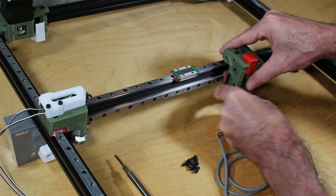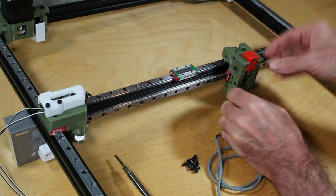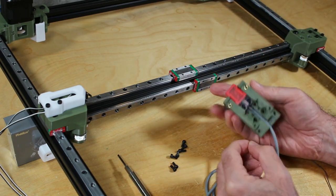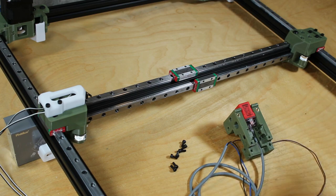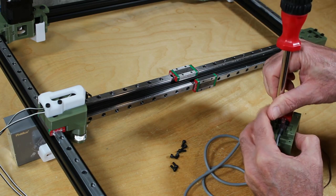Then we'll just fit the carriage on the blocks of the linear rail. Here I'm test fitting it and aligning everything and then I'll just bolt it in with the M3 screws.